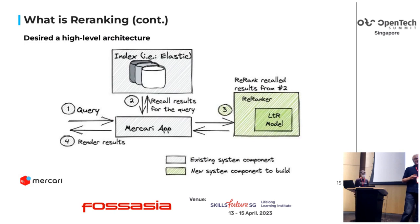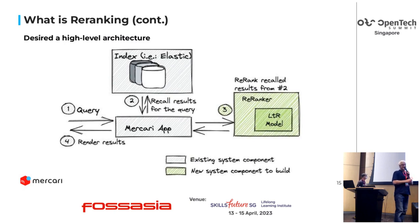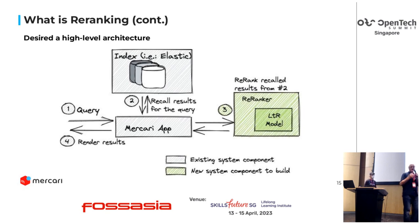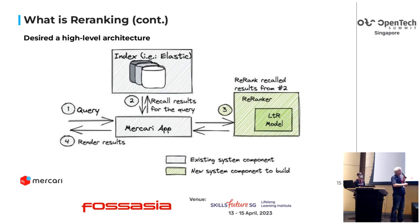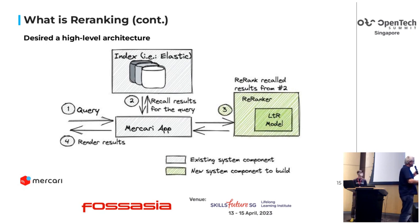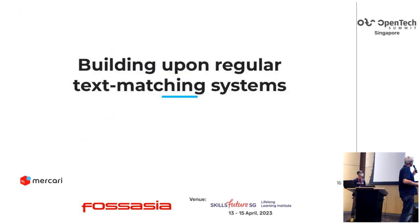The basic setup was all done. We have the Mercari application at the center and we have the index with Elasticsearch — that was all already in place in 2021. That was our basic setup, and the aim was: how can we improve on top of this by just throwing in something that takes the results from Elasticsearch and then reorders them in some way using machine learning? That is what was developed over the last two years.